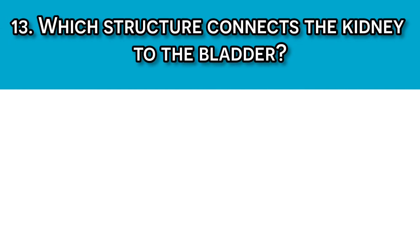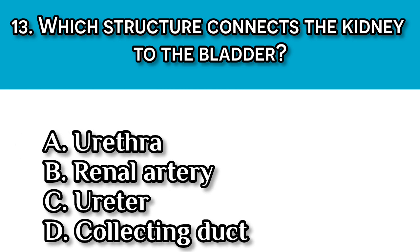Question number thirteen: Which structure connects the kidney to the bladder? A. The urethra, B. The renal artery, C. The ureter, and D. The collecting ducts. Our answer should be C, the ureter. The ureters are muscular tubes that carry urine from each kidney to the bladder.